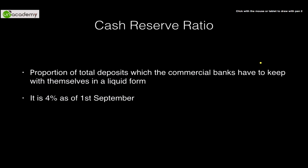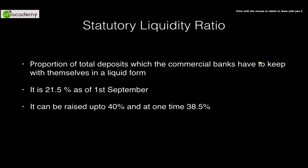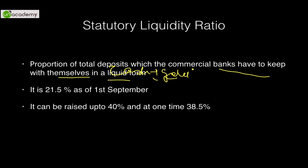Coming to the second type of rate, that is SLR — Statutory Liquidity Ratio. These are those funds which are kept by the commercial banks with themselves, in a liquid form — in the form of cash as well as gold. As of now, it is 21.5% as of 1st September. SLR can even be raised up to 40% by the RBI in order to control the credit of money in the market.